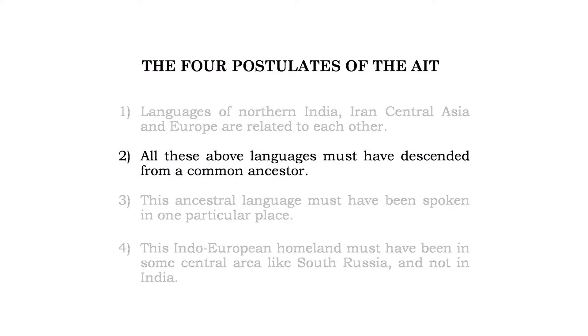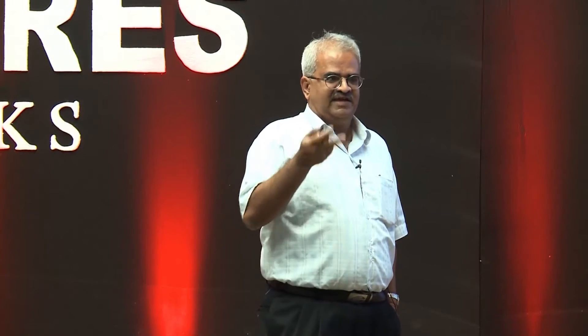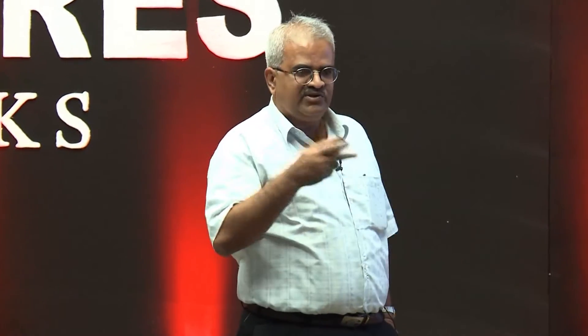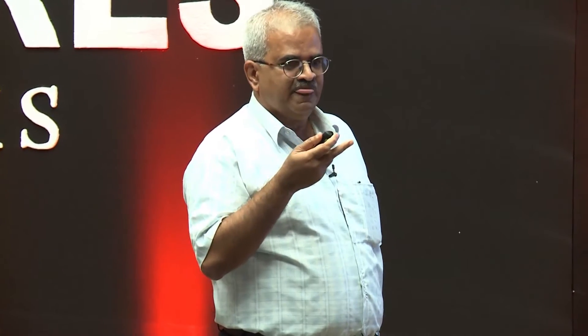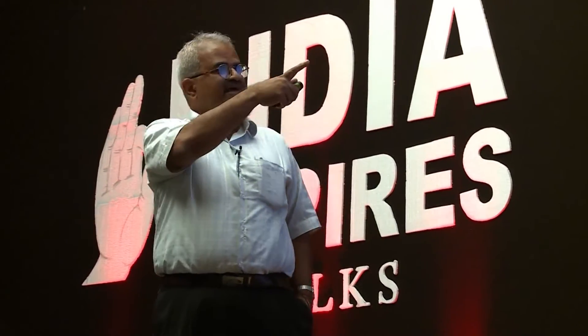The second postulate is that all these languages, since they are related to each other, must have descended from a common ancestor — just as Marathi and Hindi came from Sanskrit. All these related languages must have come from some ancestral form. That ancestral form is not recorded anywhere, but linguists, through linguistic reconstruction, compared all existing Aryan languages of India, Europe, and other places and artificially reconstructed this language, which is called Proto-Indo-European. All these languages are considered descended from that Proto-Indo-European language.